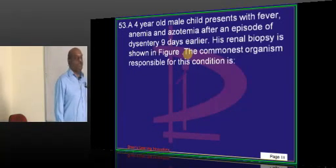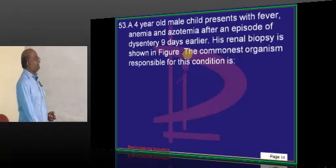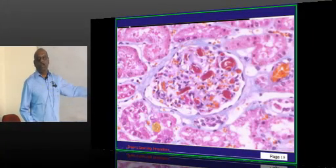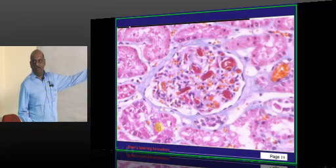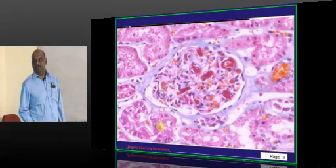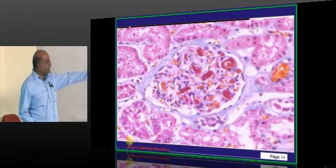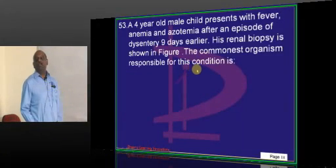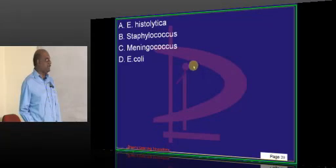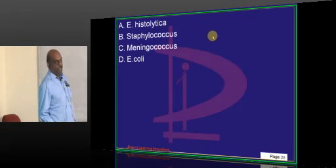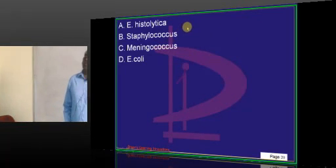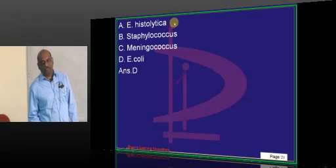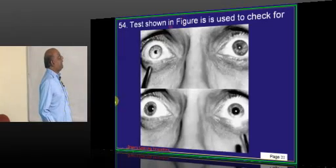A 4 year old with fever and azotemia, anemia, dysentery, renal biopsy is showing presence of fibrin. Fibrin laden, microangiopathic hemolysis. Microangiopathic fibrin clots are the ones which are being seen. So what is a commonest organism which typically lead to this? It is the E. coli O157 strain. It is the one which is being implicated in hemolytic uremic syndrome.